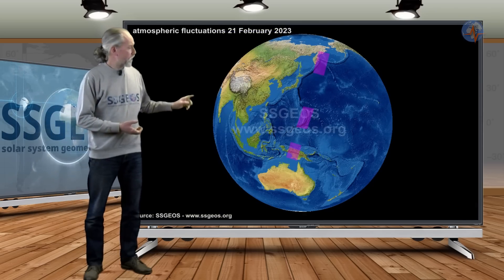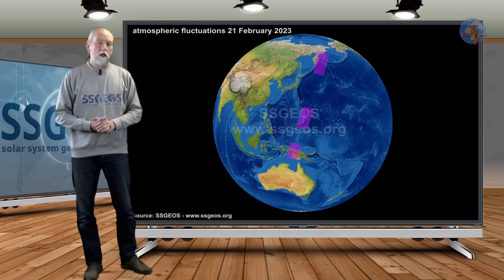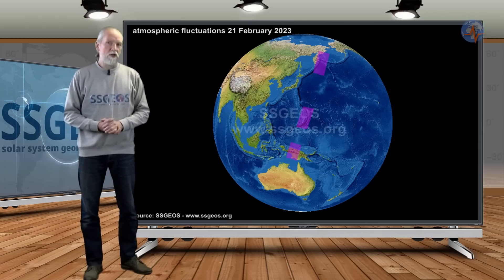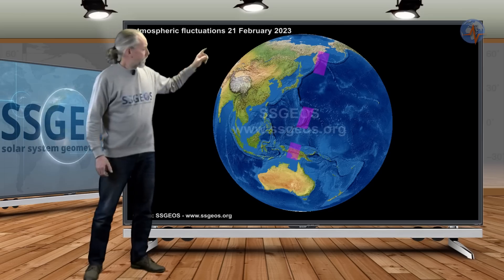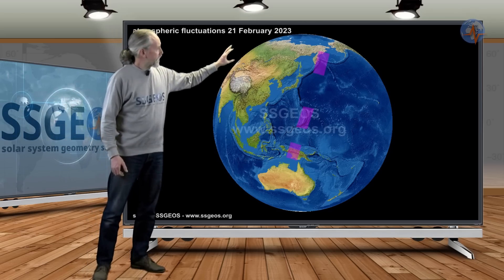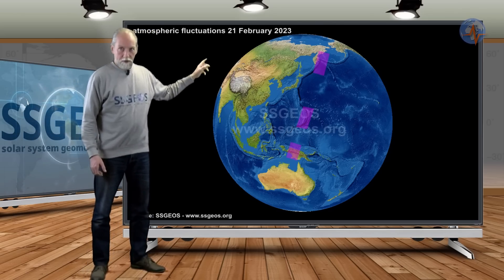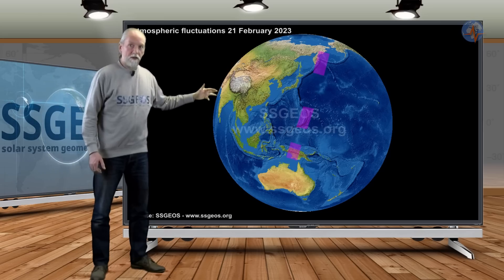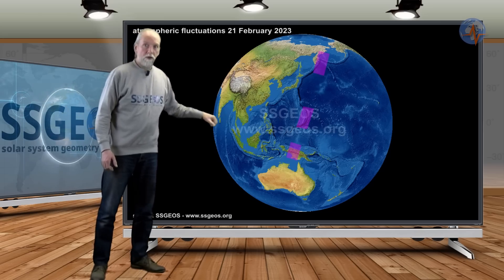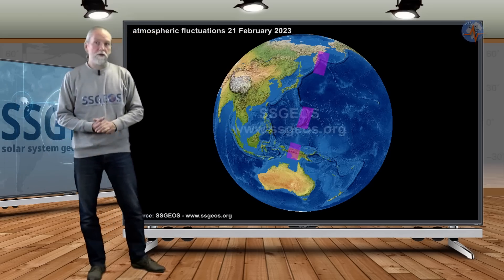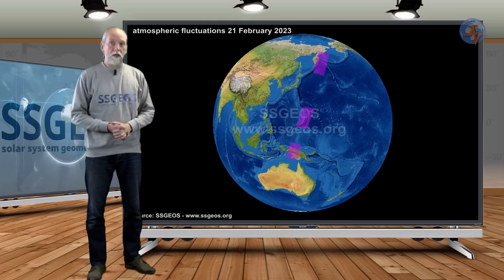If we look at atmospheric fluctuations that we had in the last couple of days, only one significant fluctuation actually occurred and was over the West Pacific. It marked regions east of Kamchatka and also south Japan, that is the Izu Islands, the Bonin Islands, and then further south the New Guinea region. It is the only significant atmospheric fluctuation that we actually recorded.